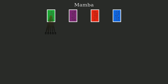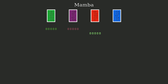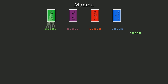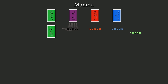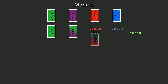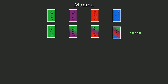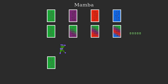Mamba is a new neural net architecture that is better than transformers at language modeling. Yes, that's right — after reigning supreme for seven years, the transformer has finally been dethroned. Well, maybe. So far Mamba has only been tested at small model sizes, up to a few billion parameters, but the results so far are promising.